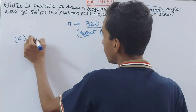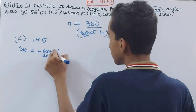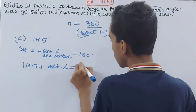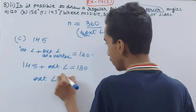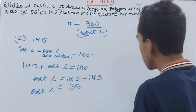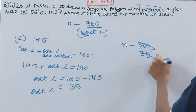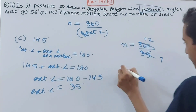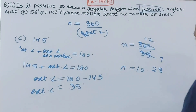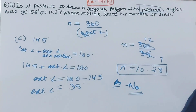For part c, the interior angle is 145 degrees. Interior angle plus exterior angle at a vertex equals 180 degrees. So 145 plus exterior angle equals 180 degrees, giving the exterior angle as 180 minus 145, which is 35 degrees. Now n equals 360 divided by 35. Cancelling by 5 gives 72 divided by 7, which is approximately 10.28 — a decimal, not a whole number.